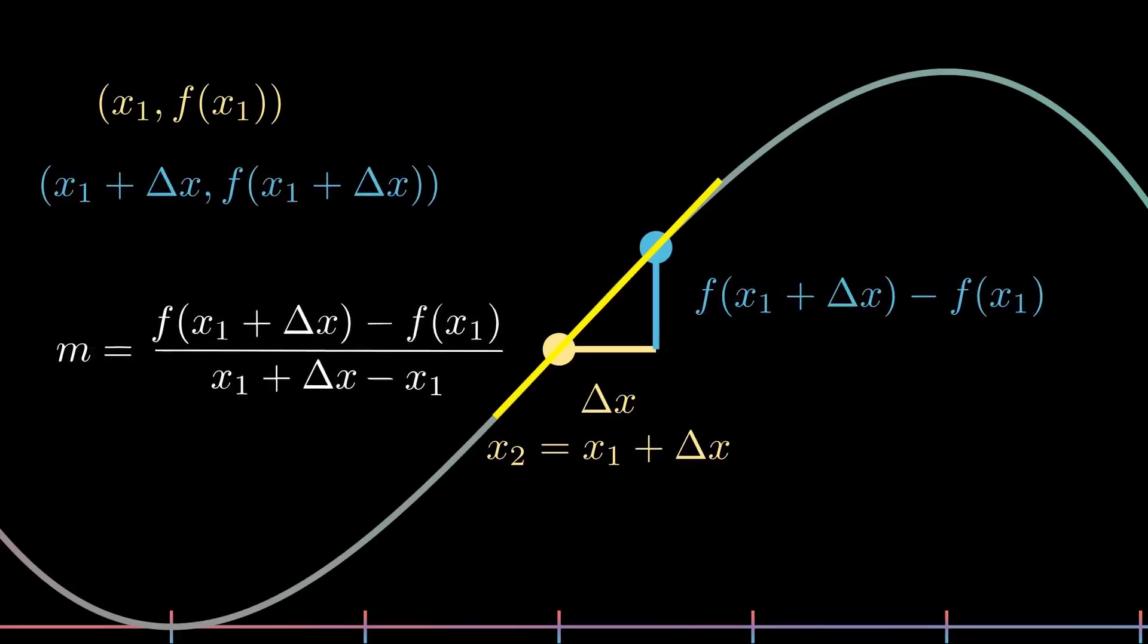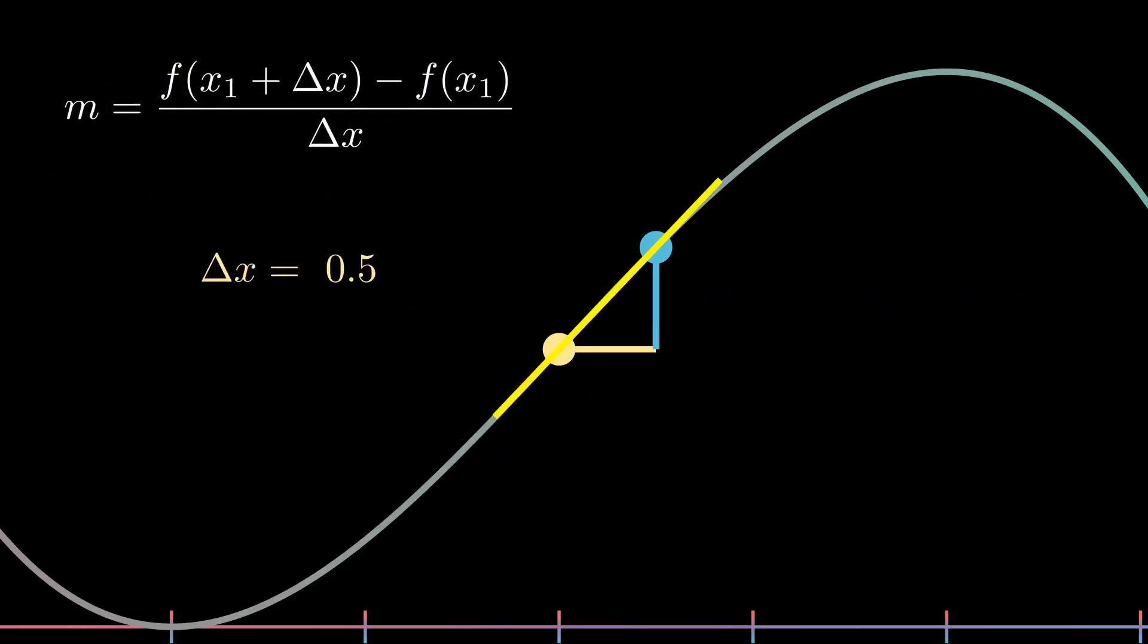Now to bring these points together, we can simply just decrease delta x and make it approach zero.